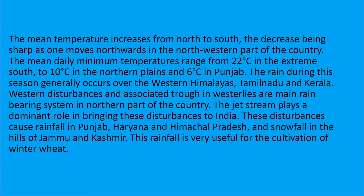In the northern plains the temperature can be around 10 degrees centigrade, and especially in Punjab it can drop to 6 degrees centigrade. During this season there are western disturbances in the western Himalayas that can bring rain to Tamil Nadu and Kerala, and snowfall to Kashmir and Himachal Pradesh. This winter rainfall helps in cultivating wheat.